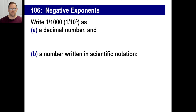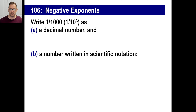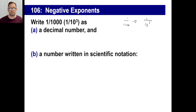We're going to move on to negative exponents, and this is interesting. Rather than just jumping right into this, let's talk about the logic behind it. First off, you tell me how to write 1 one-thousandth as a decimal number. 1 one-thousandth is the same thing as 1 over 1,000, which is 10 to the third power, because 10 times 10 times 10 is 1,000.